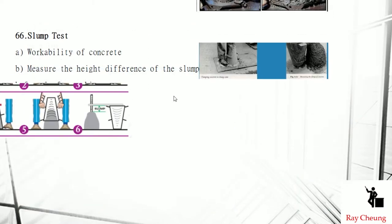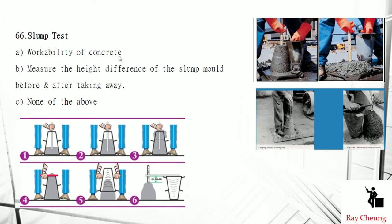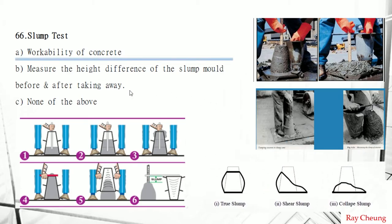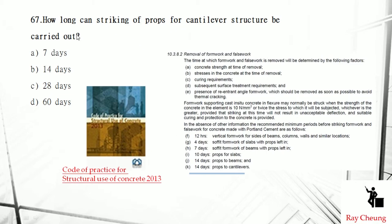This is the last topic: the slump test. The slump test is talking about the workability of the concrete. The left-hand side is concrete delivered on site; the right-hand side is also delivered on site. Once we take out the cone, if it totally collapses, it means the concrete has too much water inside and does not work properly. This is talking about the workability of concrete.